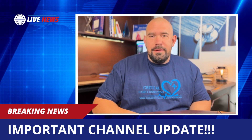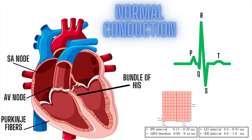Let's talk about normal conduction and show you the pathway of how the electrical current flows through the heart. We're going to show that in relation to an ECG waveform, and that will help you diagnose heart blocks and understand why they happen. Here in the picture you've got the SA node — this is considered the pacemaker of the heart, it sets the tone for your heartbeat. On the bottom you've got what's called the AV node.